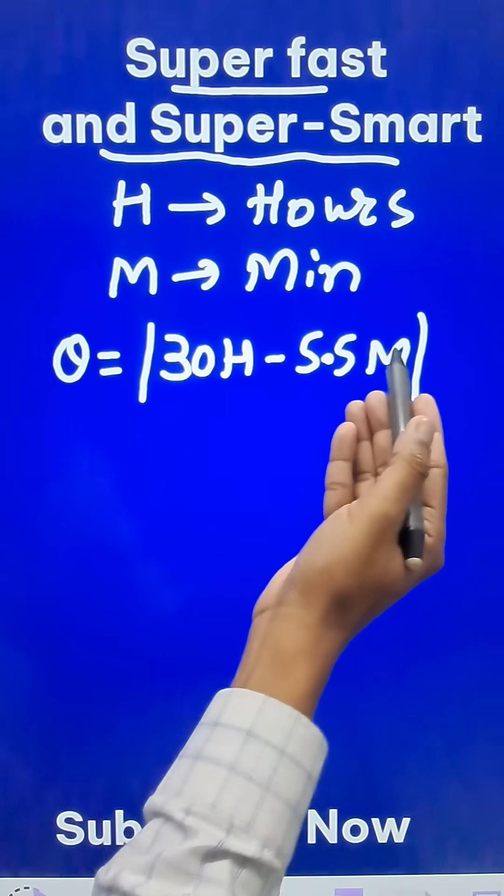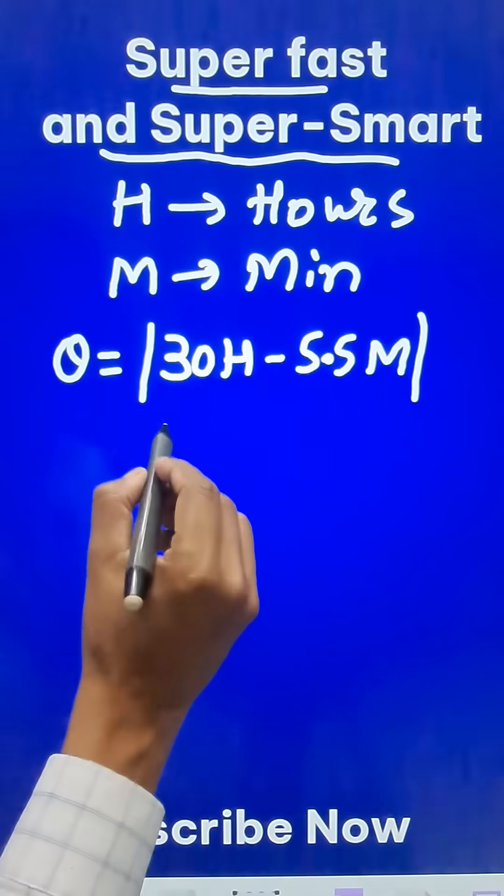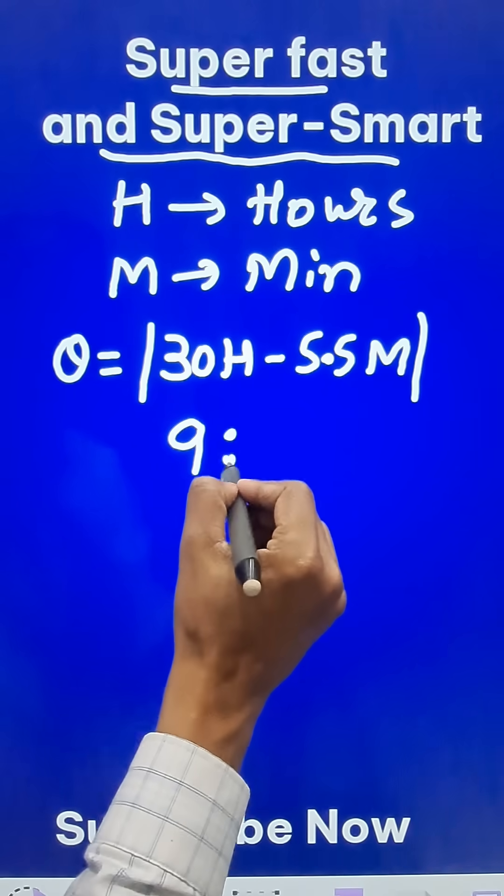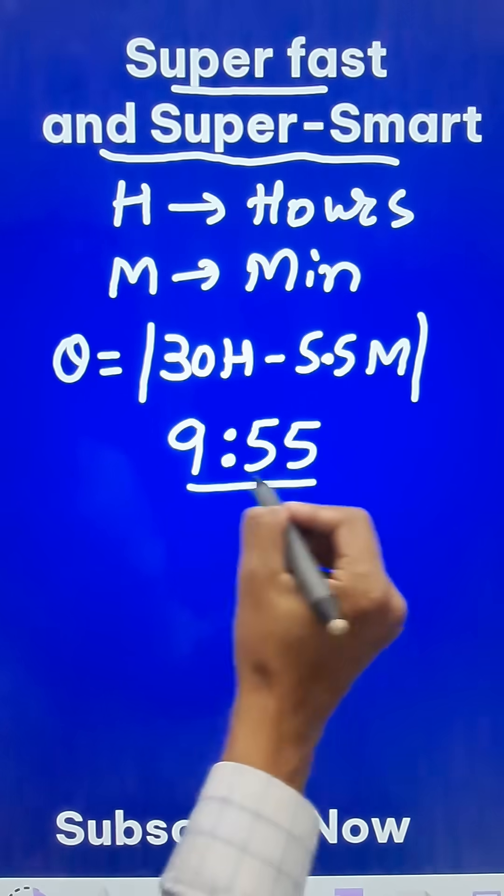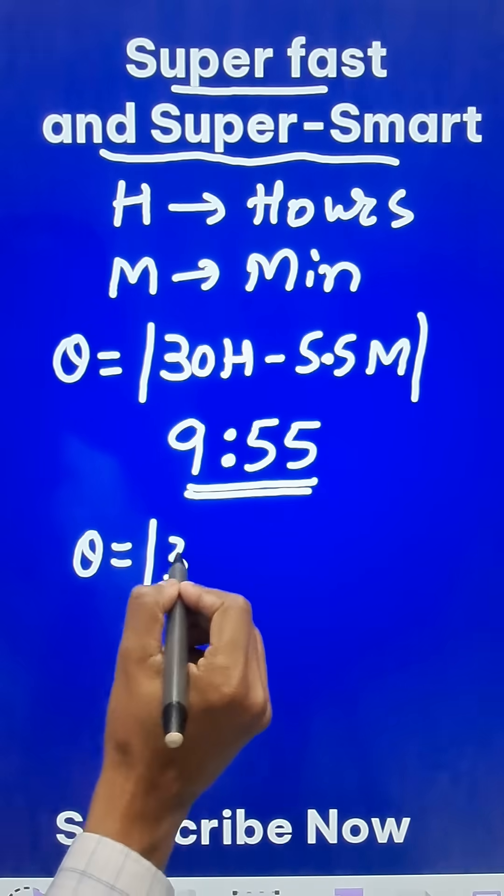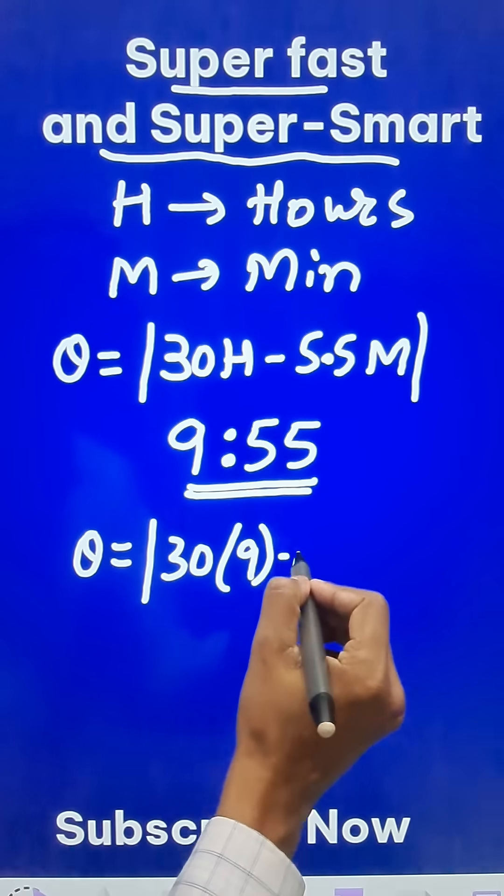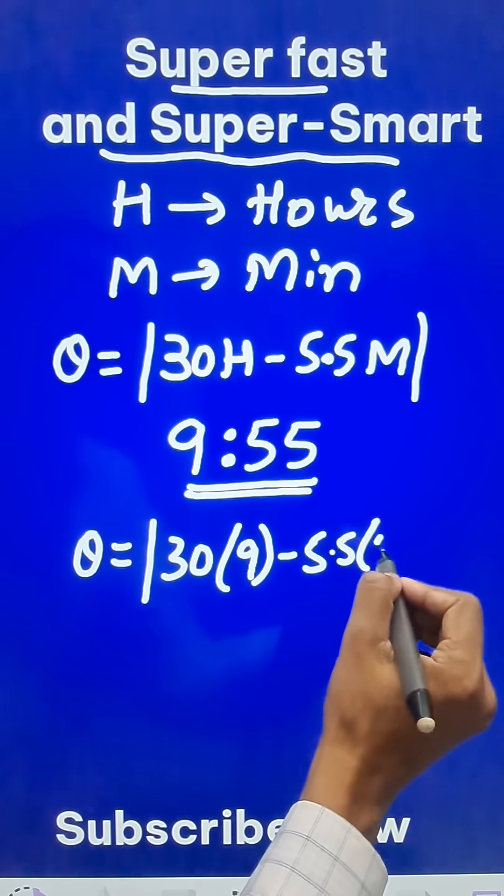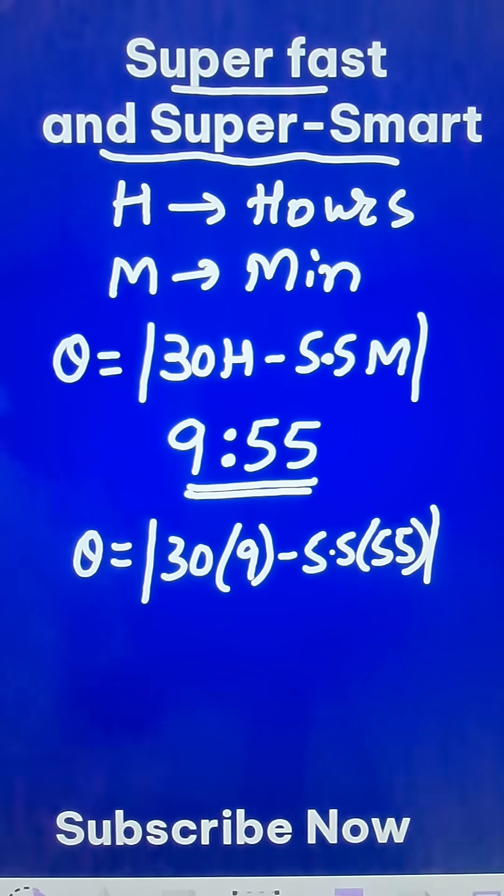Now suppose the time is 9:55 am or pm, then the value of theta will be 30 times h, that is 30 times 9, minus 5.5 times 55, and we take the modulus.